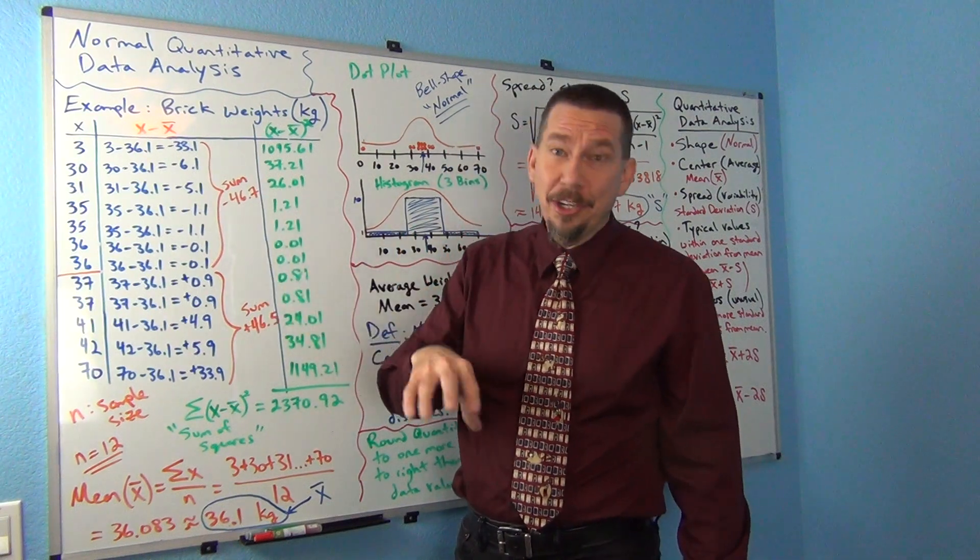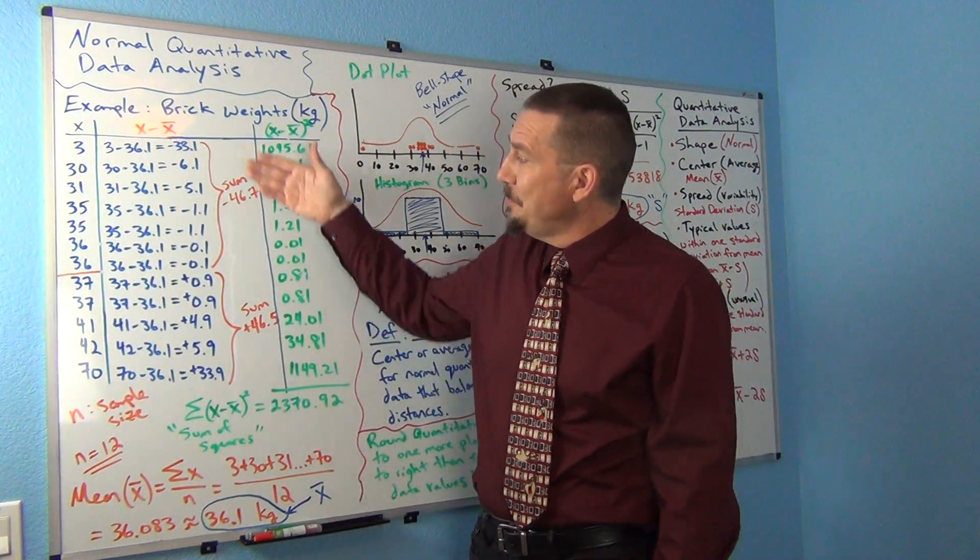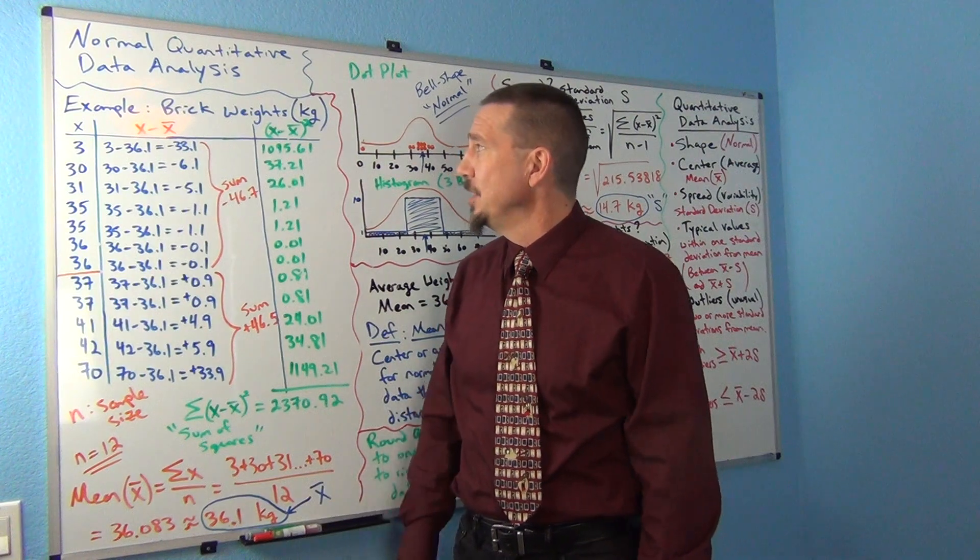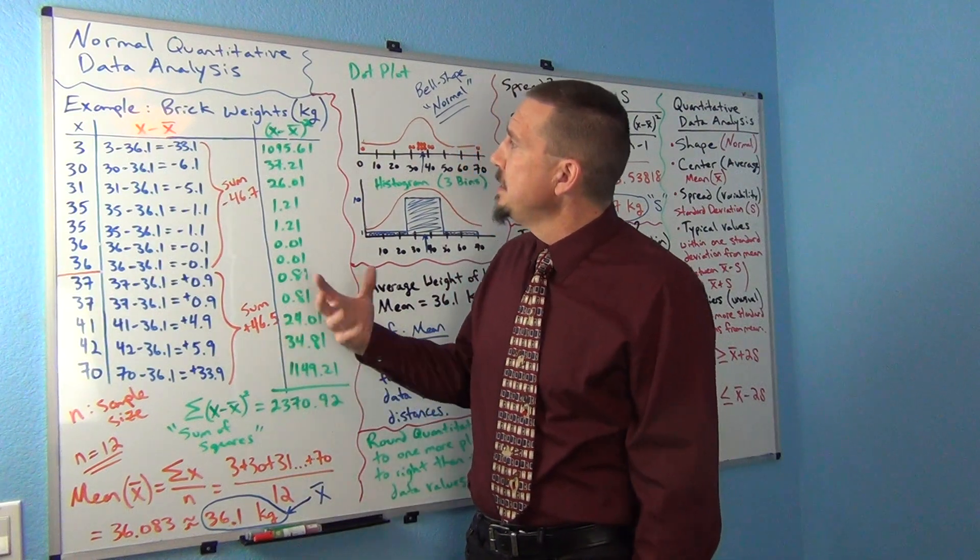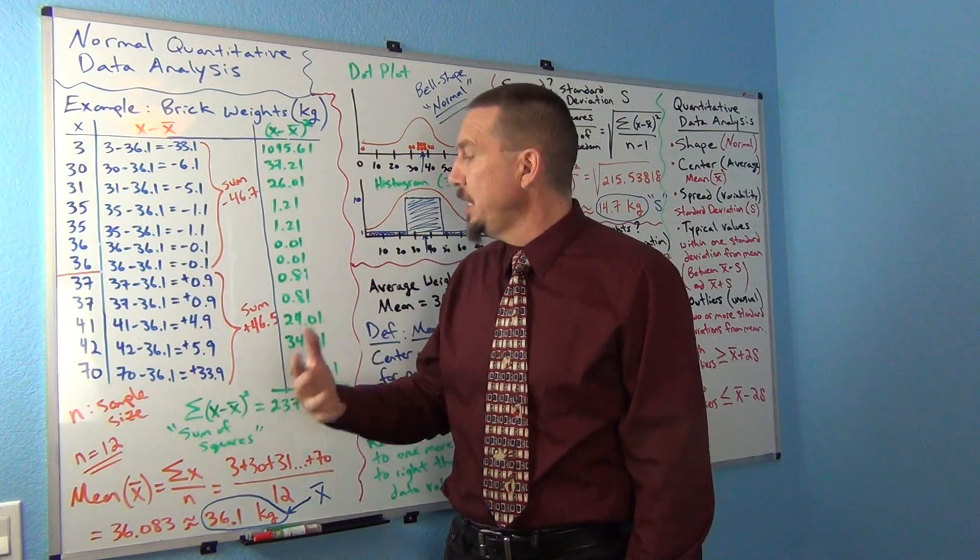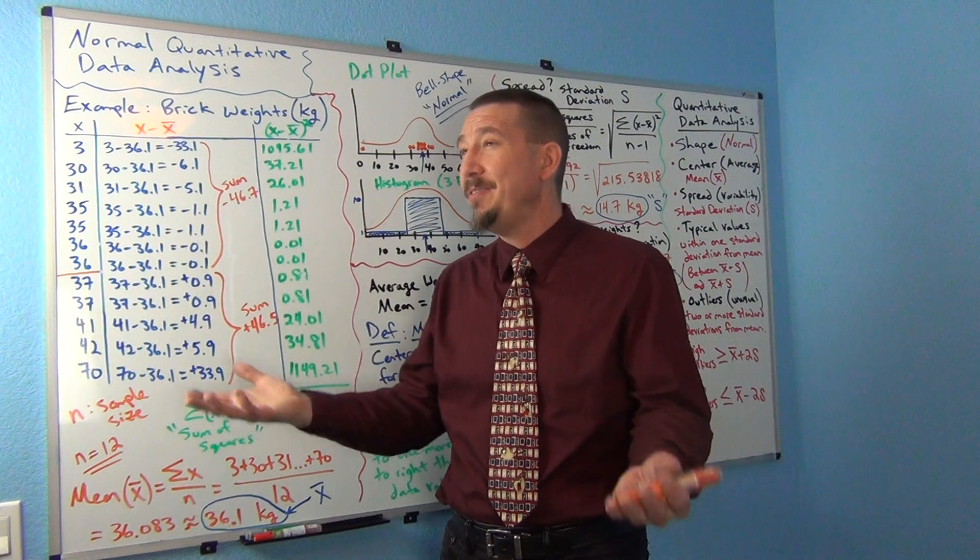I shouldn't say distance can't be zero. It could be zero if all the numbers were the same. But in this case, we shouldn't have a distance of zero. So, what we do instead, and stats are very big on squaring things.